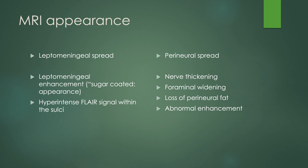Perineural spread of tumor presents as nerve thickening. If you're looking especially at CT, it can be foraminal widening around that nerve. There can be subtle loss or infiltration of the perineural fat, and especially you would like to see abnormal enhancement of the nerve and around the nerve, including infiltration of the perineural fat.